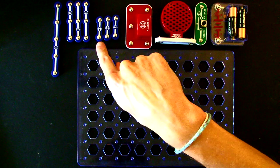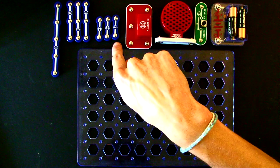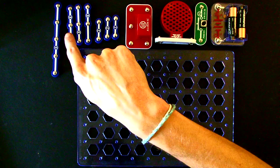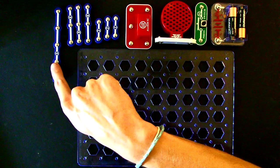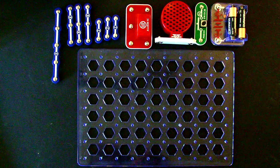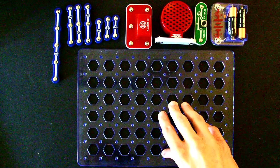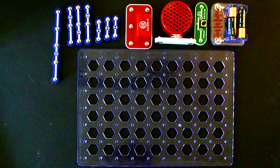You'll also need three of these two snap wires, three of these three snap wires, and one five snap wire. It also helps to have your plastic snap circuits grid. Let's go ahead and get started.